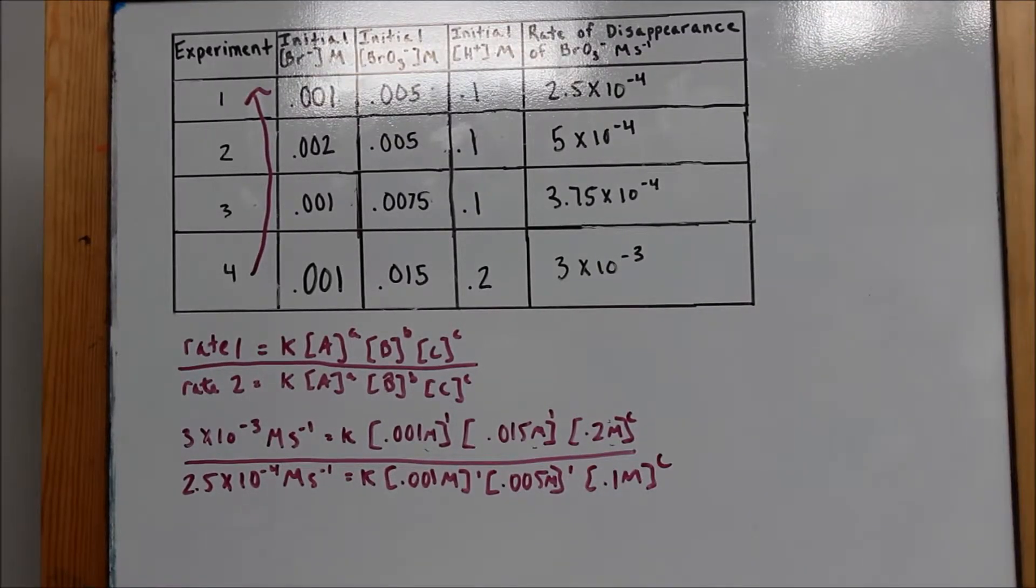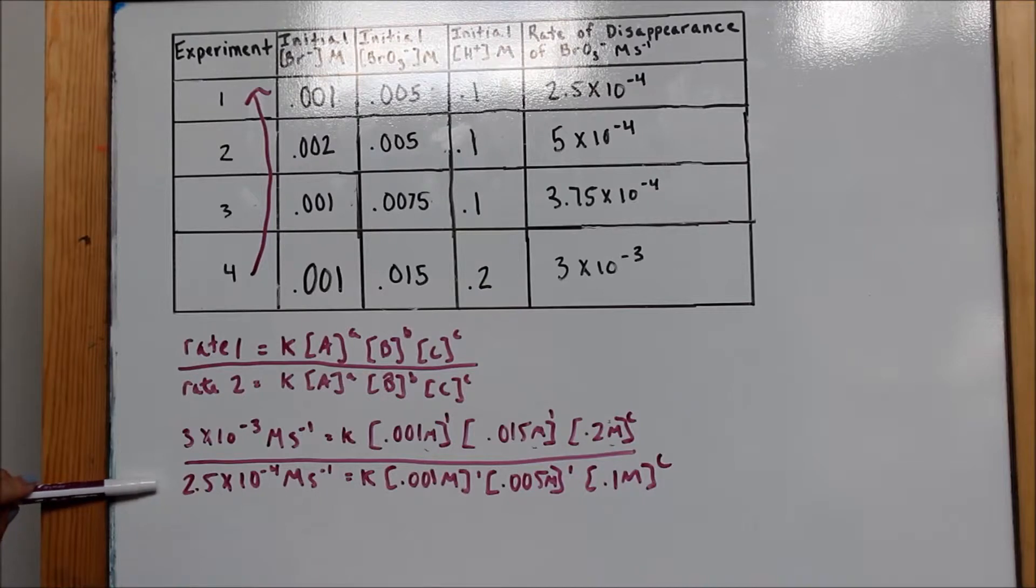Part A, III. To find the order of H+, we will use the mathematical analysis. The general formula for this is given as rate 1 over rate 2. Remember that the lowercase letters A, B, and C do not represent coefficients of the balanced equation. Instead, they represent orders of each reactant. I use experiment number 4 on top, because its rate is larger, and experiment number 1 on the bottom. Since we have already determined the order of Br- and BrO3- in the previous part A, we can replace lowercase letters A and B with 1s, because they are first order. We can also substitute the concentrations for each experiment, which are given in the table. We are solving for C.